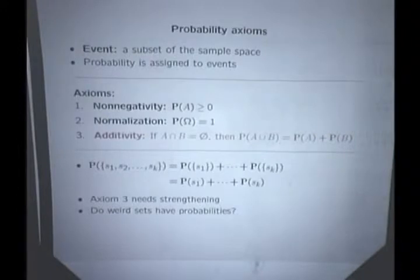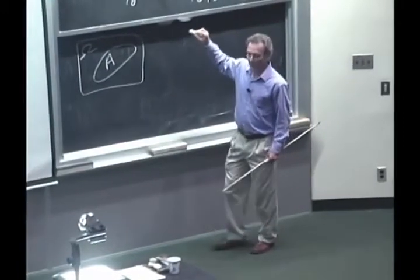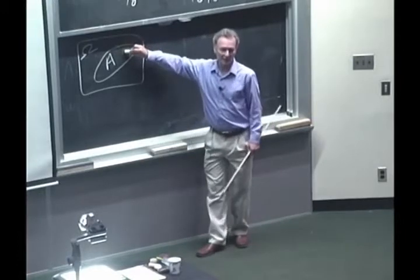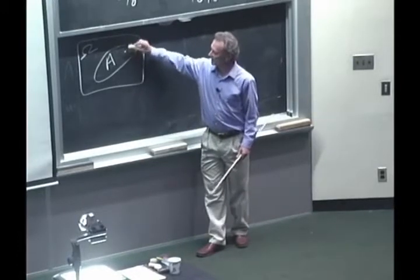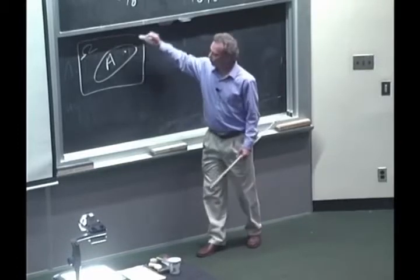When we talk about subsets of the sample space, we usually call them events as opposed to subsets. The reason is because it works nicely with the language that describes what's going on. The outcome is a point. The outcome is random. The outcome may be inside this set, in which case we say that event A occurred.